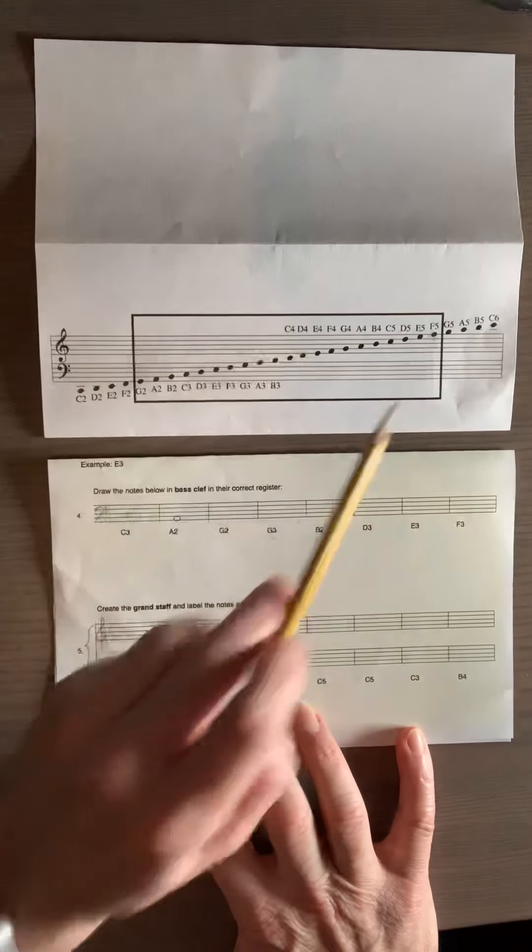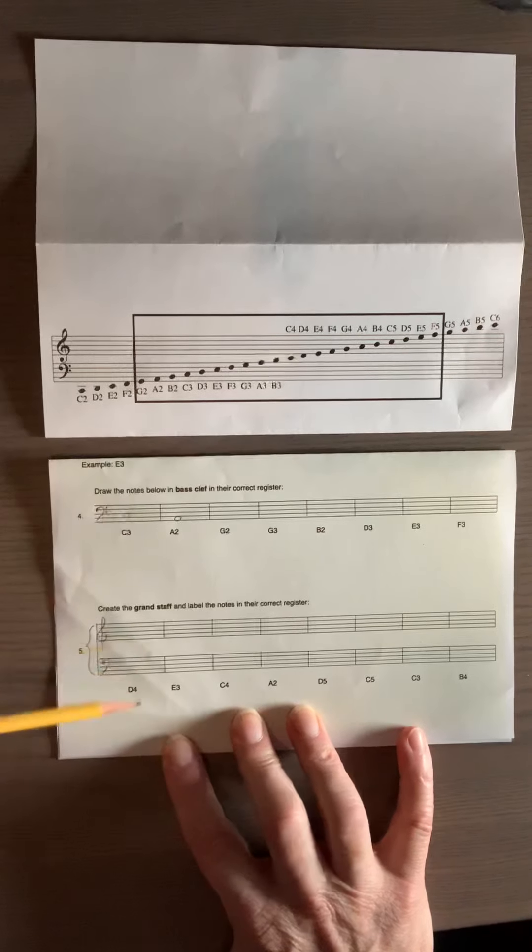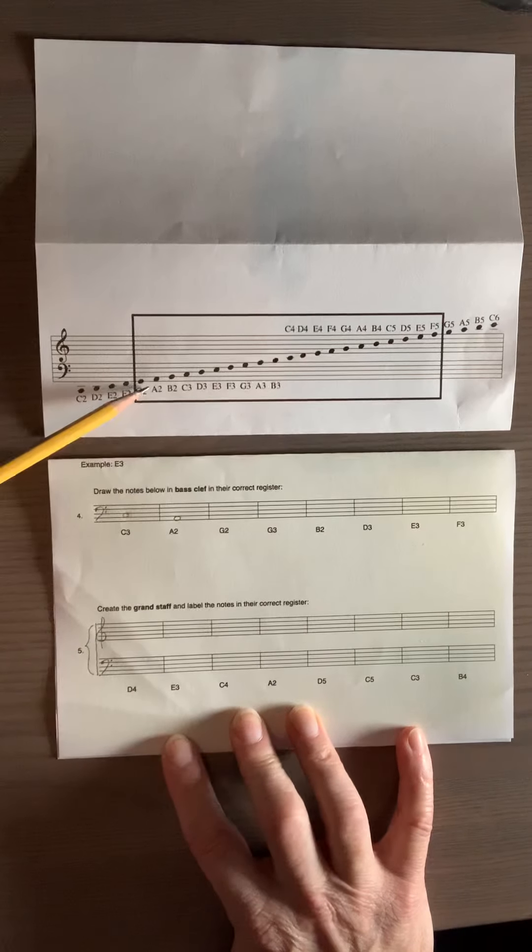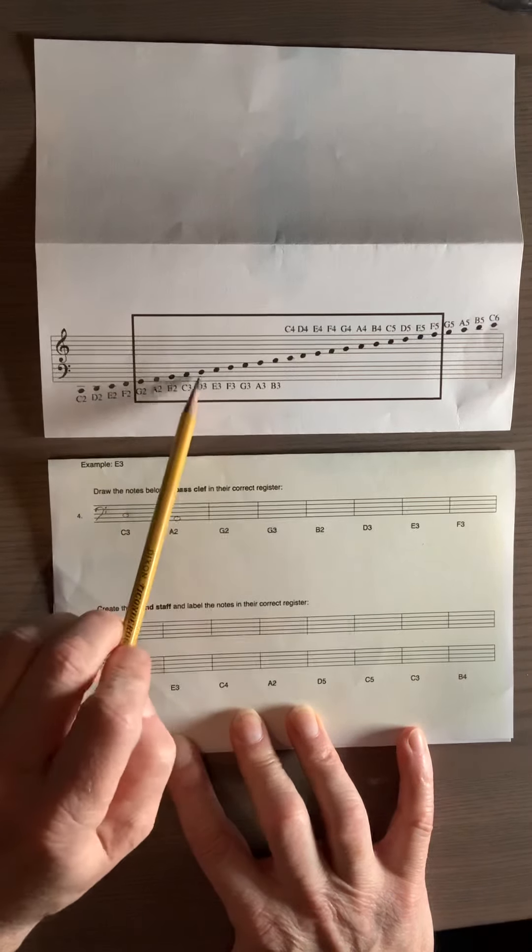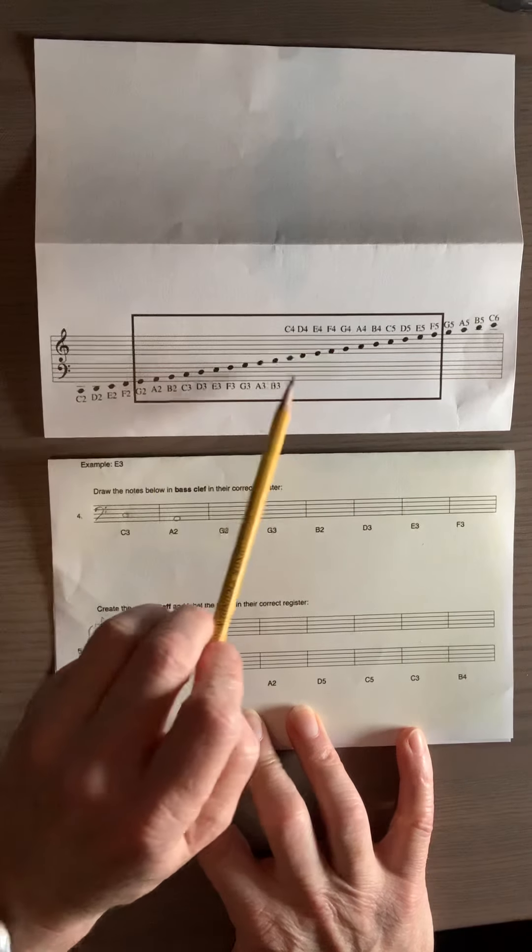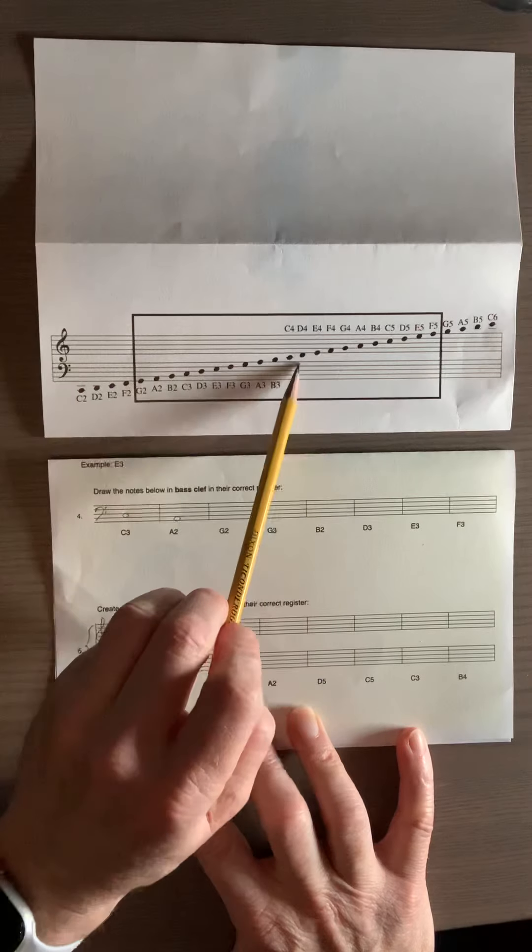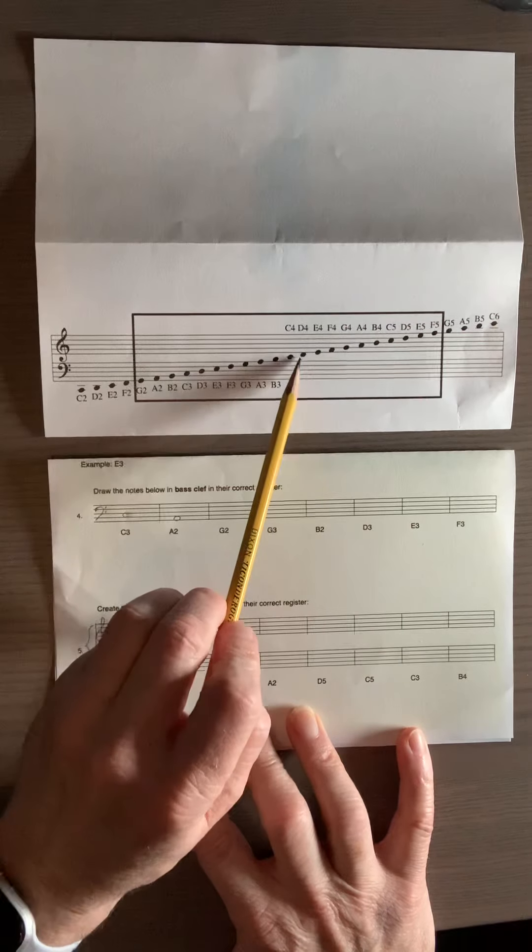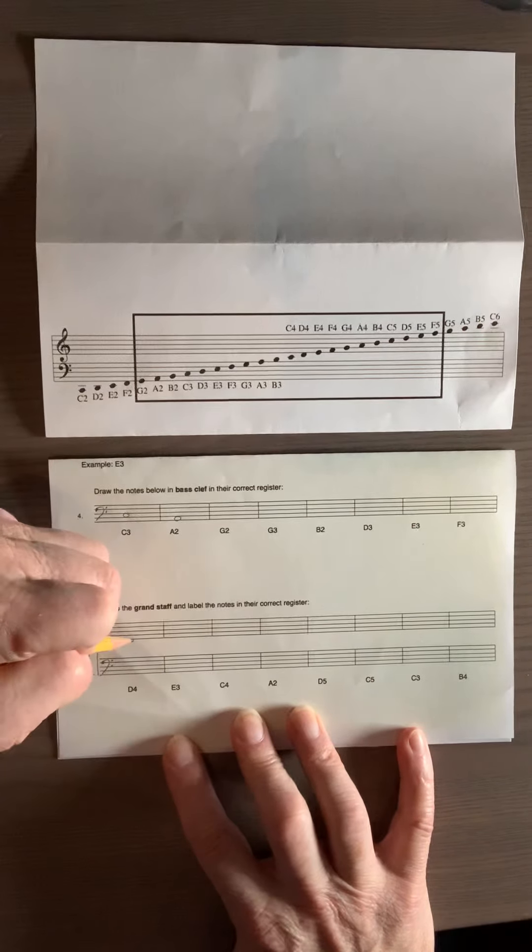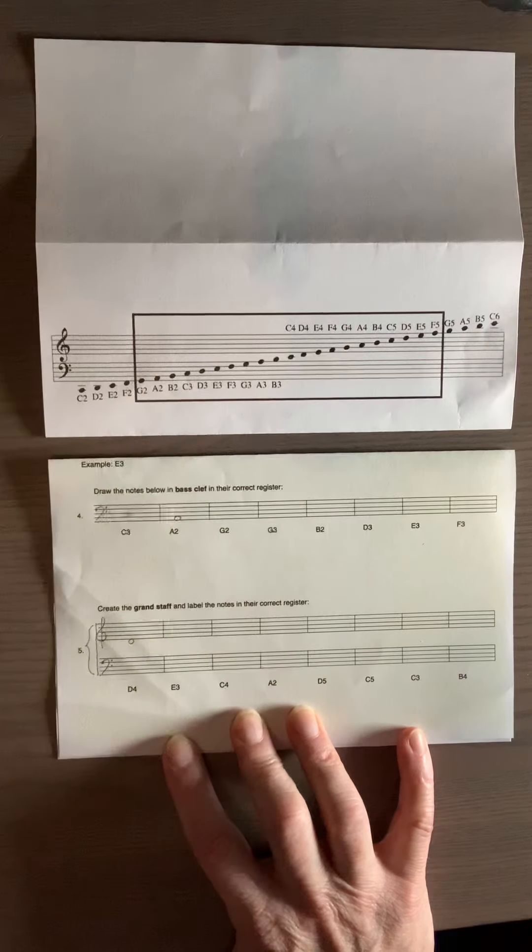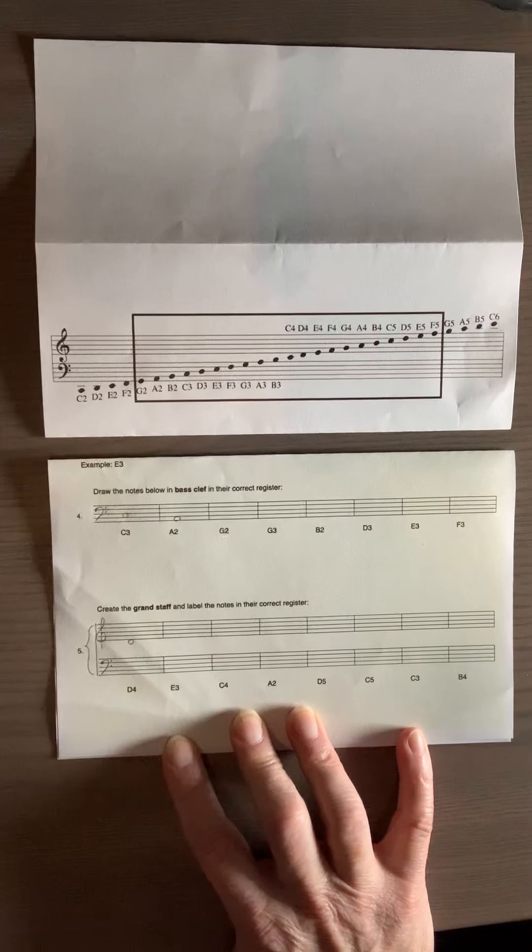Now, again, you just look to this diagram. And you look for D4. Okay, well, where is D4? Is it in the bass clef? No, these are all twos and threes. It must be in the treble clef. Here is D4 right there. So it is the one that's just below the first line in the treble clef. So that's my D4.